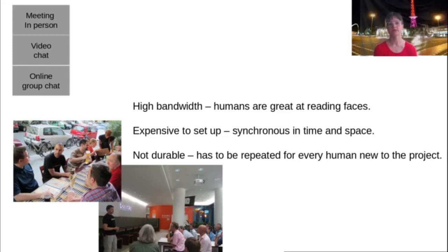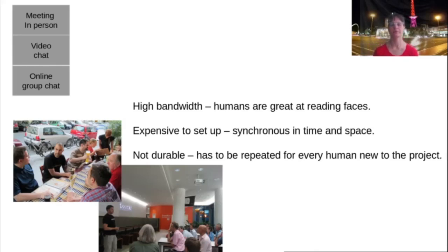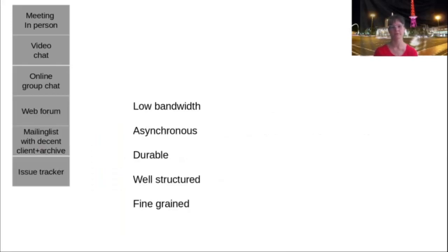Video chat is fairly expensive to set up because it's synchronous in time. One option is to move to some online group chat where you're sharing short messages in a fairly synchronous way, so if there is a misunderstanding it's easy to spot and quick to fix. The only disadvantage of all of those channels is that they are not durable — they have to be repeated for every new conflict, and if you use those for information sharing, those sessions have to be repeated for every new person who joins the project. If you want something more durable, you can move to a medium that's lower bandwidth and allows for asynchronous communication, such as a web forum, a mailing list with a decent client and archive, or a traditional issue tracker.